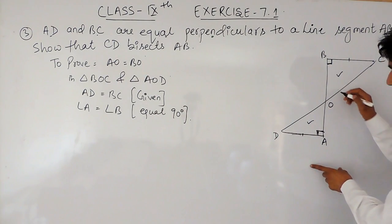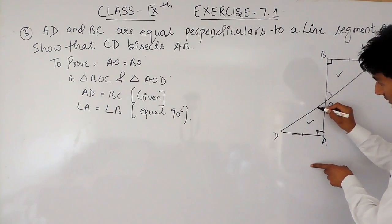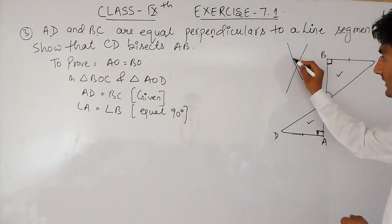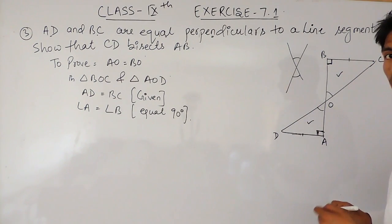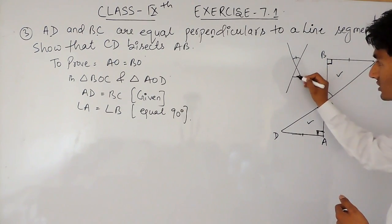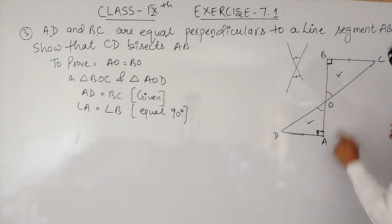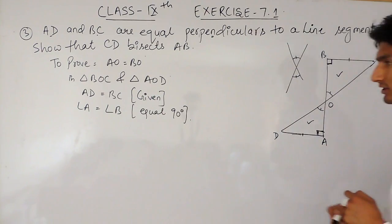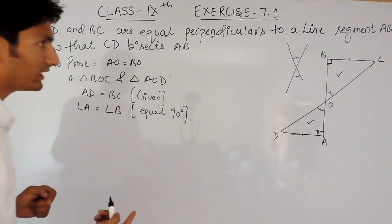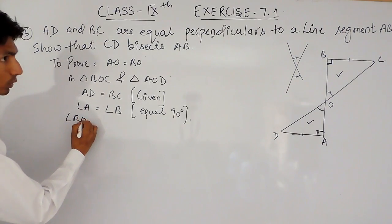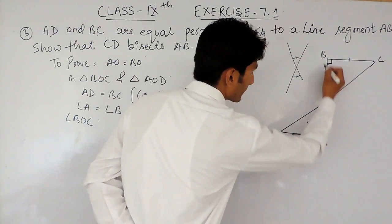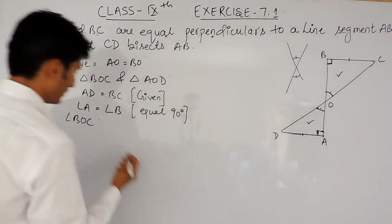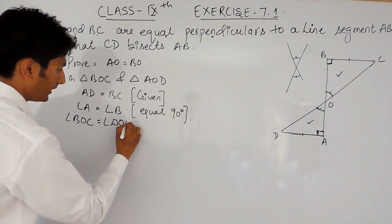One more thing can also be deduced: this angle must be equal to this angle because if two lines intersect each other, the pair of vertically opposite angles are equal. So this line and this line intercept at point O, meaning angle BOC must be equal to angle DOA — these two are vertically opposite angles.